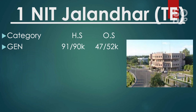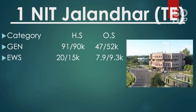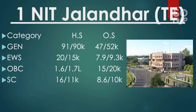Note: I will discuss only the other state cutoff here — you can check the home state side-ways. The ranks listed are General CRL ranks. For EWS other state, it is 7,900 and 9,300. For OBC, it is 15,000 and 20,000. For SC, it is 8,600 and 10,000. For ST, it is 3,400 and 4,300. If you want to know your category rank based on your percentile, check the video on percentile versus category rank.